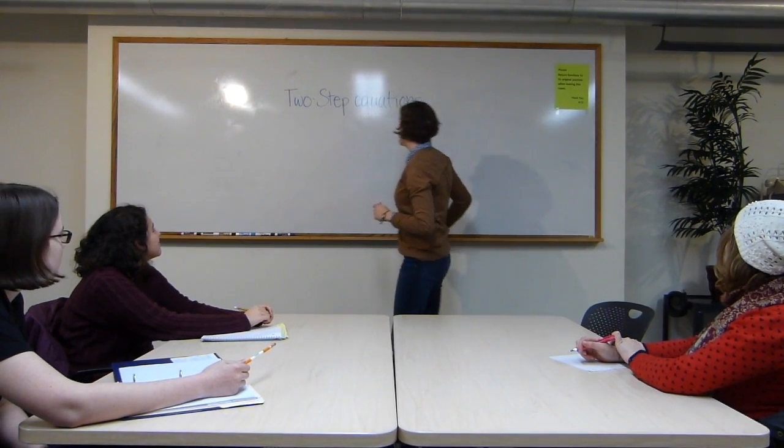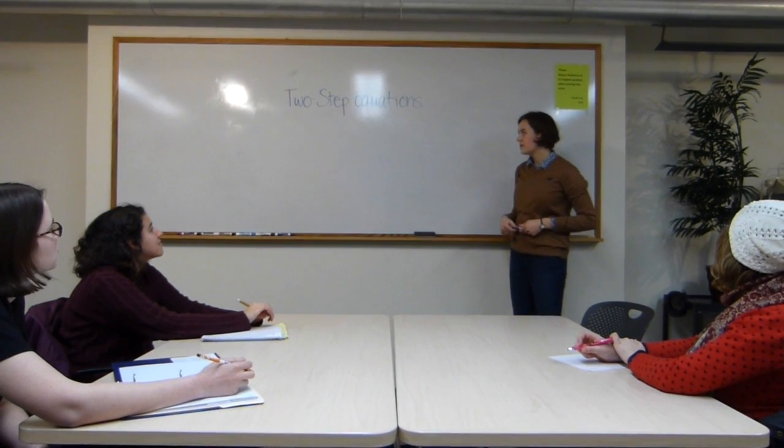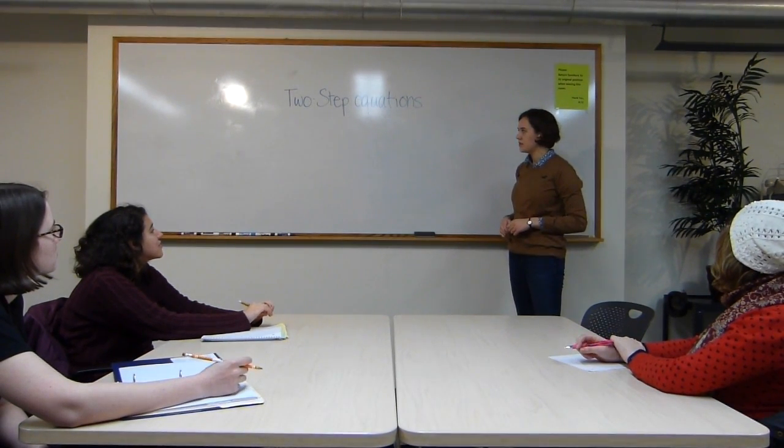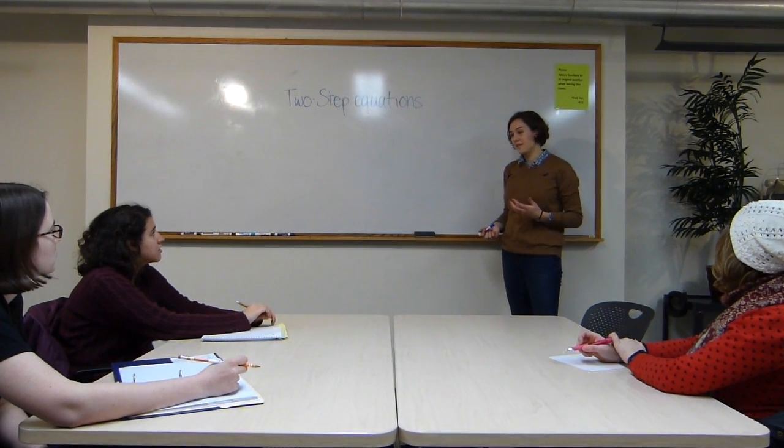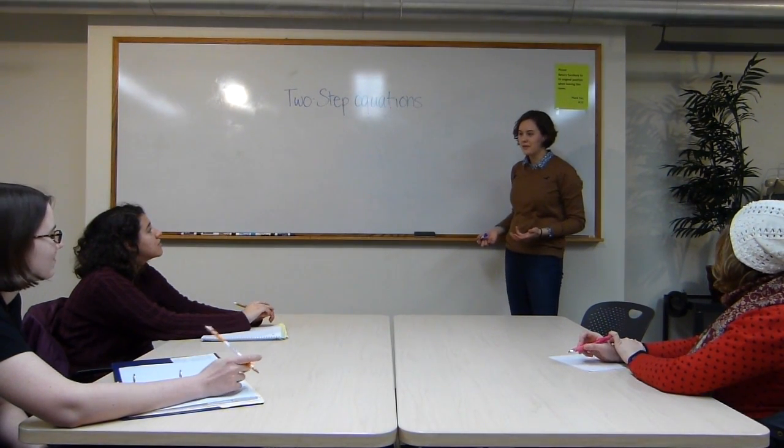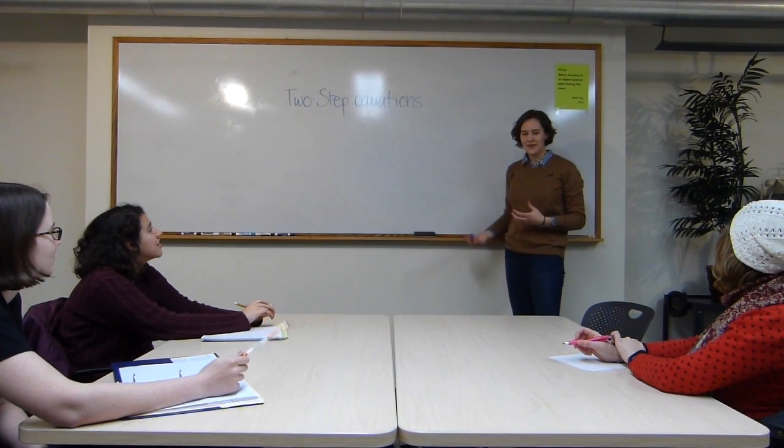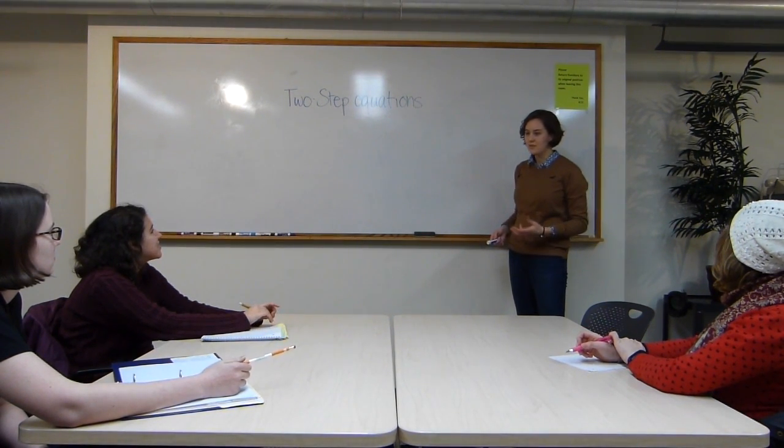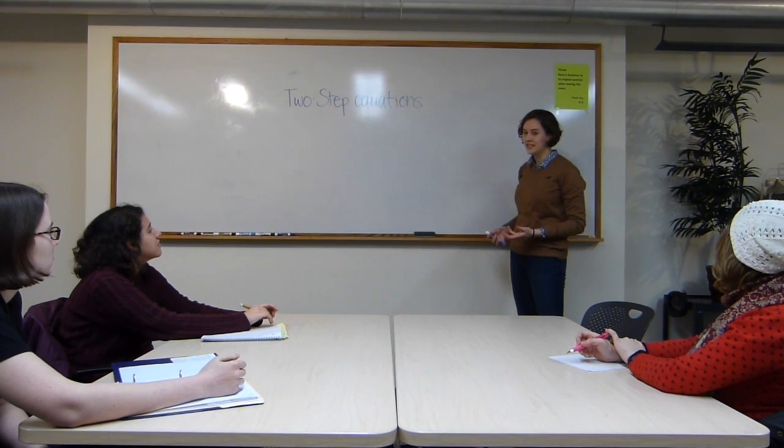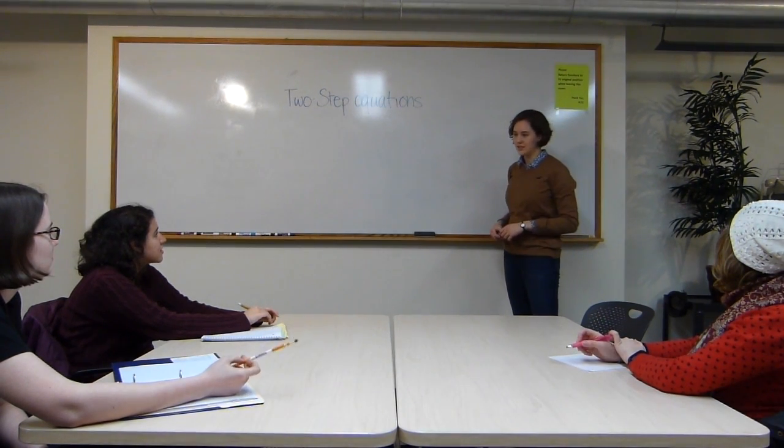And the most important thing to remember when solving one-step or two-step equations is that whatever we do to one side of the equation we have to do to the other. So you can think of it as if you're in a three-legged race and your partner moves forward and you don't and you both fall over. And so if you perform an operation on one side of the equation that you don't perform on the other, then the two sides are no longer equal and the equation falls apart.